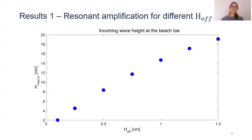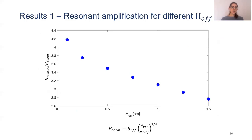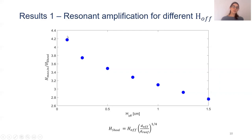We also wanted to understand the relative resonant amplification. For this, we compared how much this wave is amplifying compared to the expected wave height at the beach toe only due to linear wave shoaling, which is the variation of the wave height due to the change of water depth. What we found is that when you compare H_max divided by H_sho as a function of offshore wave height, smaller waves amplify more than larger waves, and they can even reach 4.2 times larger wave height than expected only due to wave shoaling.